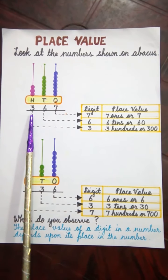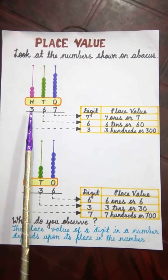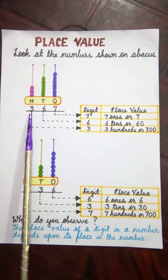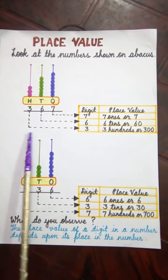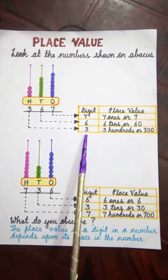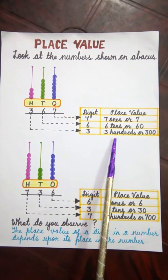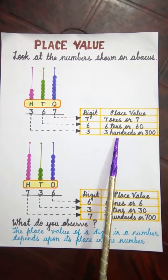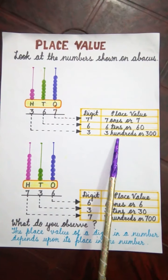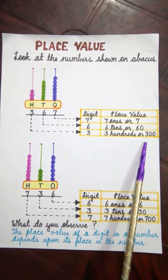Now what is the place value of 3? As 3 is in the 100's place, so the place value of 3 is 3 hundreds. Or we can say 3 multiplied by 100 is equal to 300.